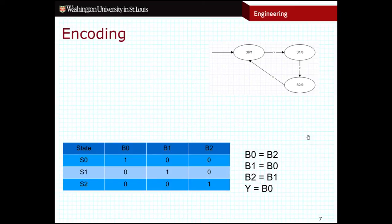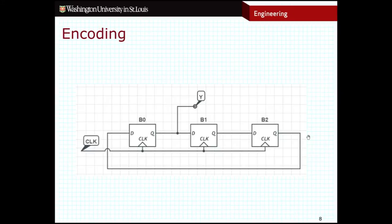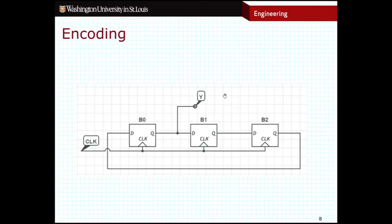Looking at how to build this circuit: I have three flip-flops, one for each bit — b0, b1, and b2. In each case, I just take the output and feed it into the next flip-flop. The output of b0 goes into b1, the output of b1 goes into b2, and the output of b2 wraps around and goes back into b0. The output of b0 is also connected directly to the output of the circuit.